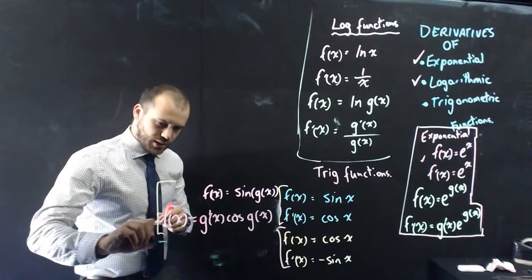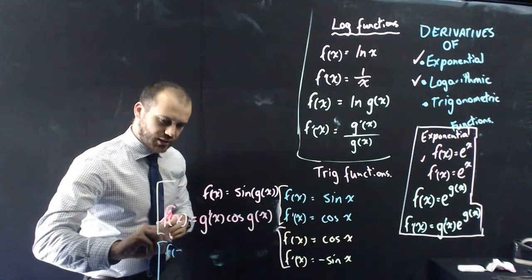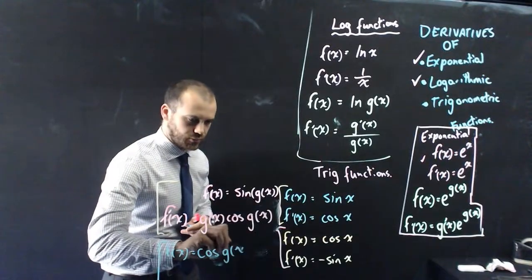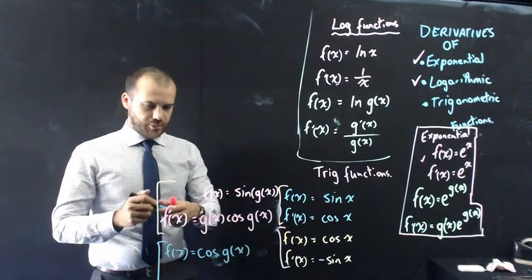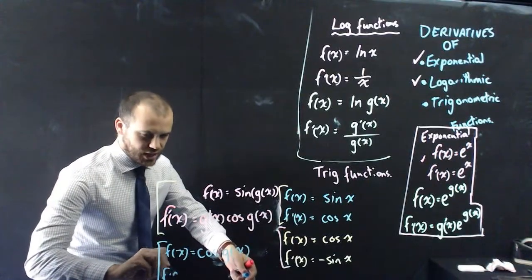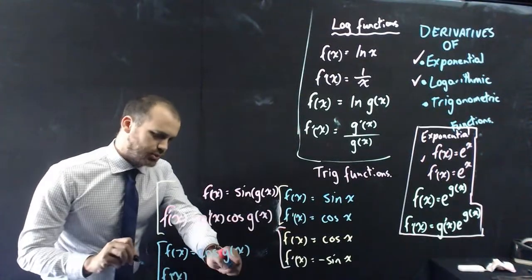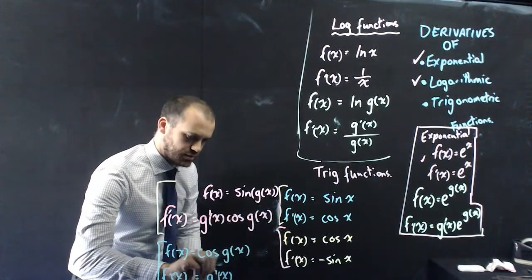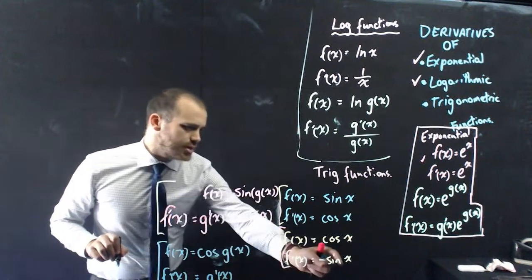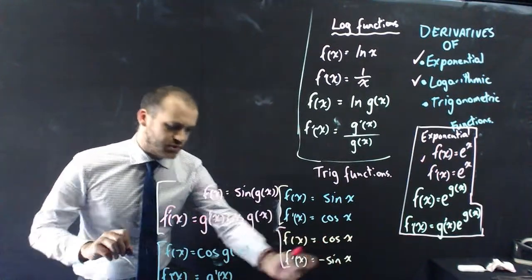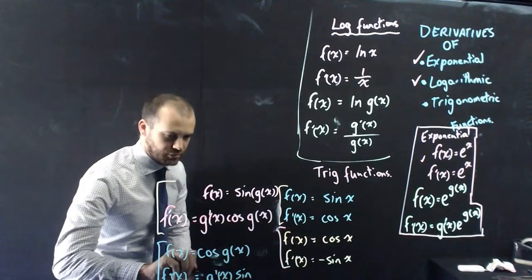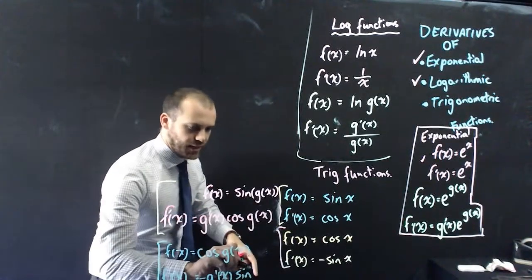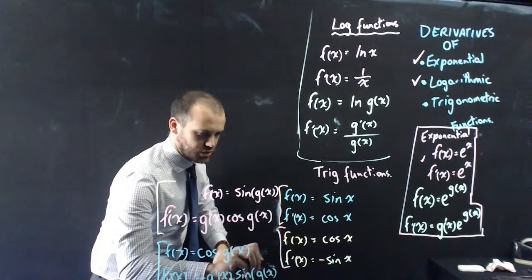For the cosine version: if f of x equals cos g of x, then f dash of x equals g dash of x times negative sin of g of x. The cos becomes negative sin, so I write sin there and put the negative out the front, and then the function inside stays as g of x.